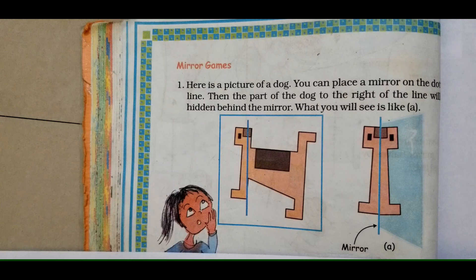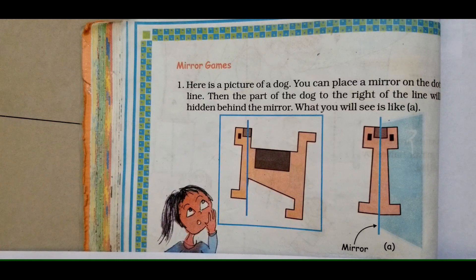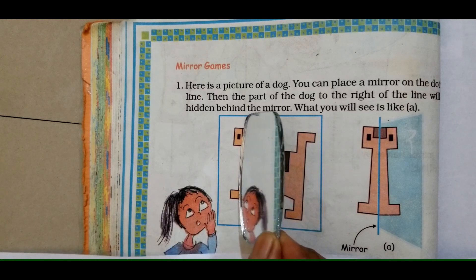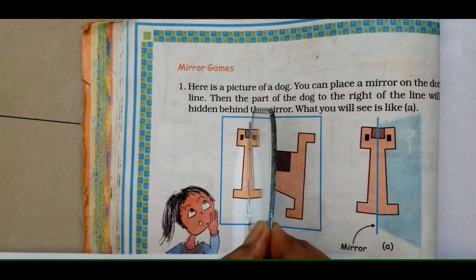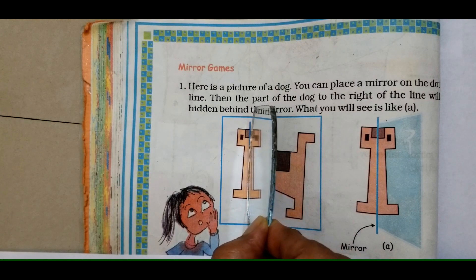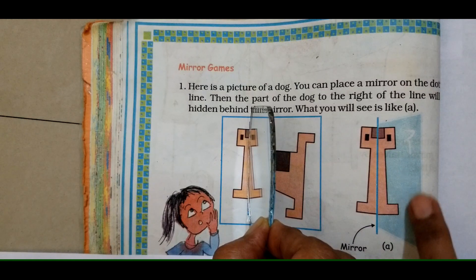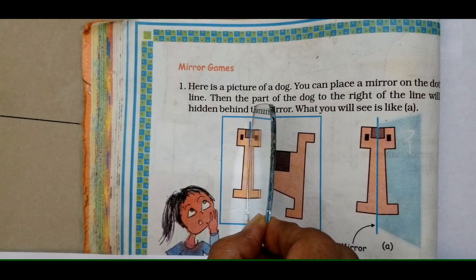Mirror games. Let us do an activity here using a piece of mirror. Here is a picture of a dog. You can place a mirror on the dotted line. The part of the dog to the right side of the line will be hidden behind the mirror. What you will see is like the picture shown in A. Let me keep a mirror here now. Can you see the reflection? How does it look? This picture exactly matches the picture given on your right side. So, this is called mirror image.